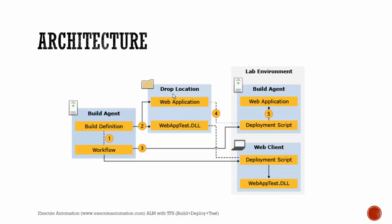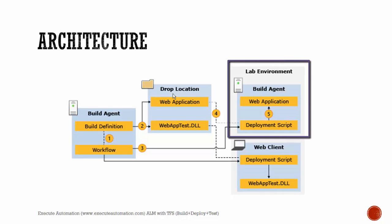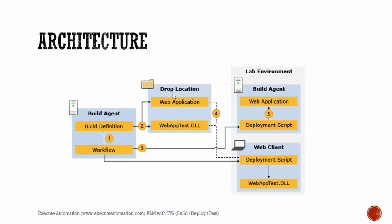The drop location will have the web application and the web app test DLL, which is the DLL you actually use for testing your application. Then you will have a lab environment — as discussed in the previous video — which will have one more build agent, a web application, and a deployment script. You may wonder why there are two build agents. The build agent in the lab environment is a remote machine, which can even be a Hyper-V machine, and it's where your actual application will be deployed and tests will be run against it.